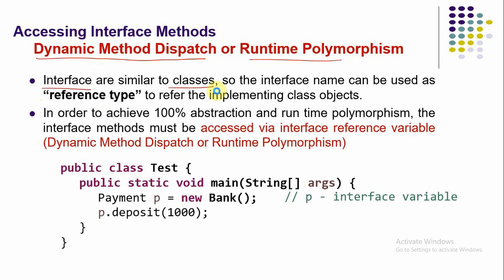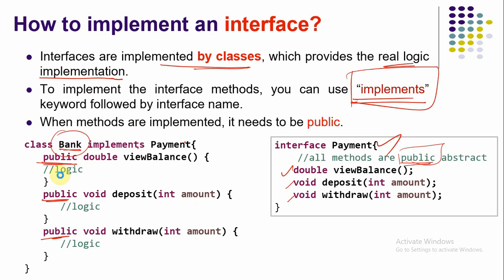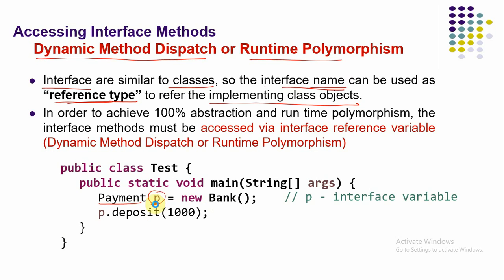Interfaces are similar to classes in that the interface name can be used as a reference variable to store the implementing class object. For example, with the Payment interface, we can create a variable 'p' and store the Bank class object in it. Then we can call all the functionalities through that reference variable. This is how we utilize the interface concept.